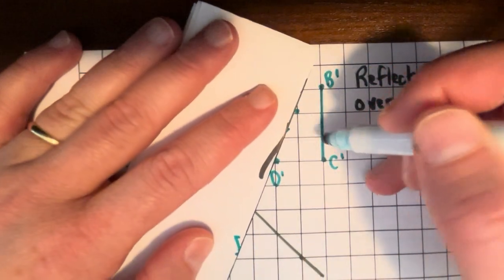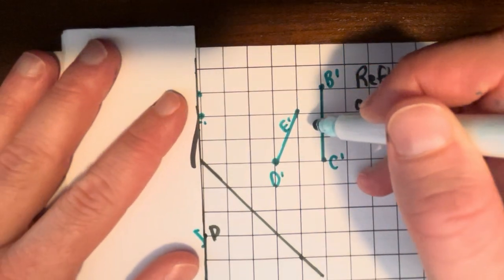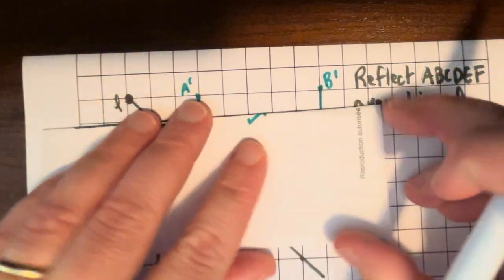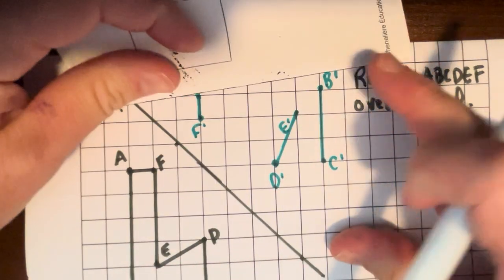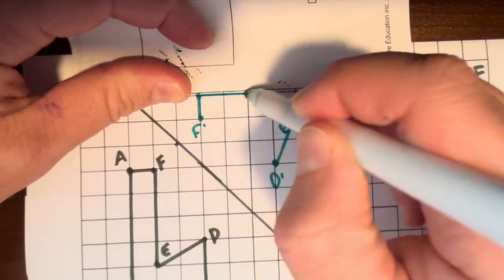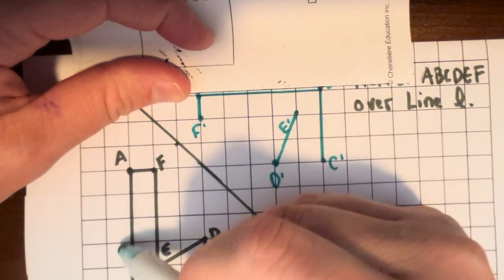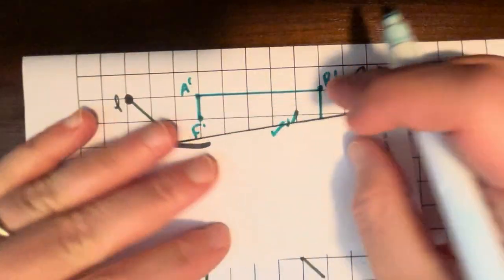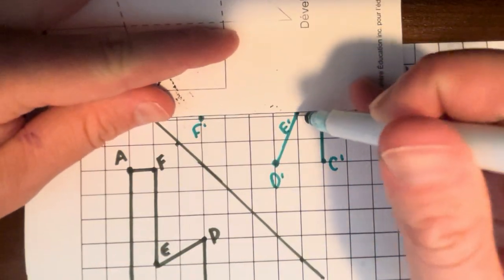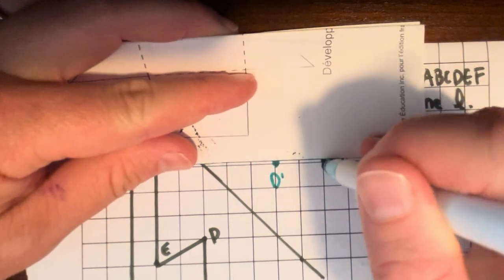So some ways you can double check your work are just by using some of the properties of reflections. You can make sure that your shape is the same size that it was to start with. And if you have a line, for example, this line I'm tracing right now is 5 squares long here, and it was to start with, so that's a good sign. Everything should stay the same size. And if you have any right angles, after you reflect them they should stay right angles. All the angles should stay the same size.